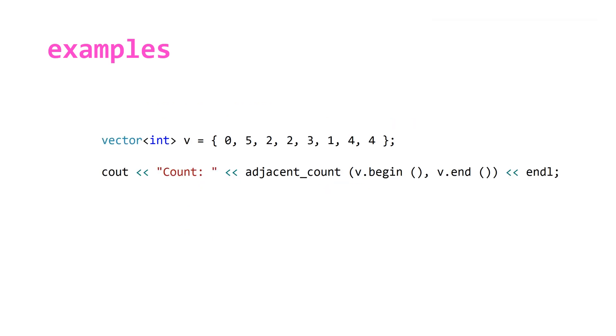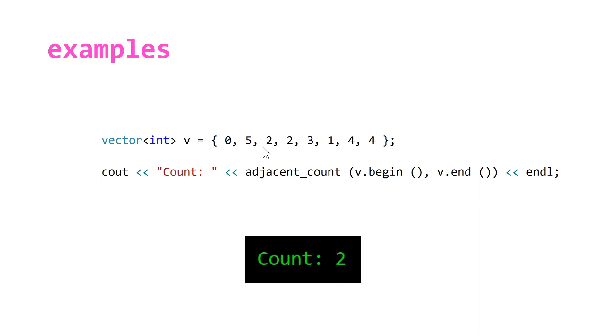So if we use this code, it looks really, really nice. Basically we've got the same vector of integers and we can just print adjacent_count of the first iterator and the past-last iterator. And this is going to output 2, so it's returning to us the number of adjacent elements that are equal, which is the two twos here and the two fours here.